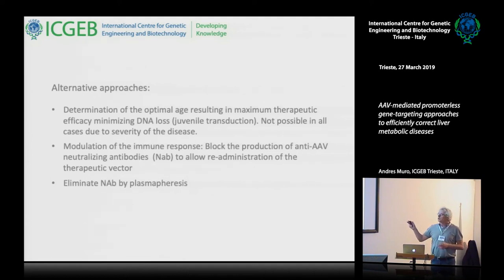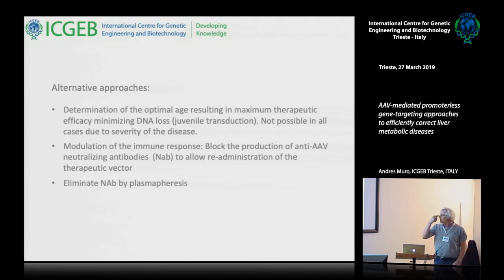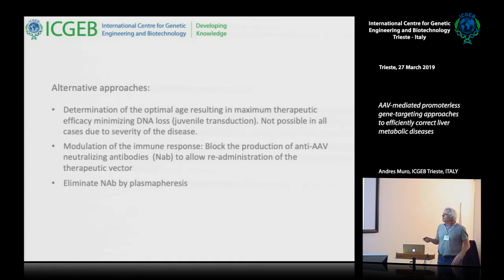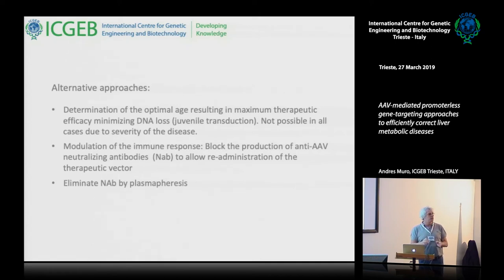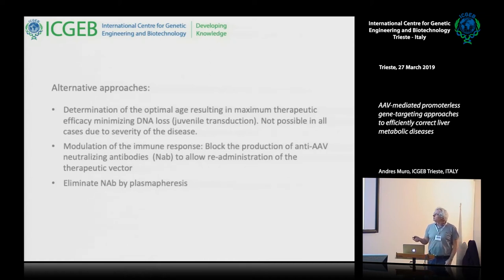There is a clinical trial ongoing for rapamycin nanoparticles for another purpose, and we are planning to use this approach also in the clinical trial for ornithine transcarbamylase deficiency. Another possibility is plasmapheresis — taking the patient's blood, passing the plasma through a column that removes the specific antibodies, creating a window during which the patient has no neutralizing antibodies and the vector can be re-infused.